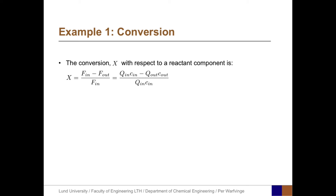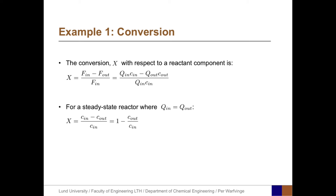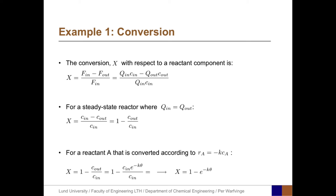The conversion with respect to a reactant is defined as x = (F_in − F_out)/F_in. In process variables, x = (q_in·C_in − q_out·C_out)/(q_in·C_in). If q_in = q_out, then x = (C_in − C_out)/C_in = 1 − C_out/C_in. For this first-order reaction, inserting the expression for C_A gives x = 1 − e^(−k·θ).